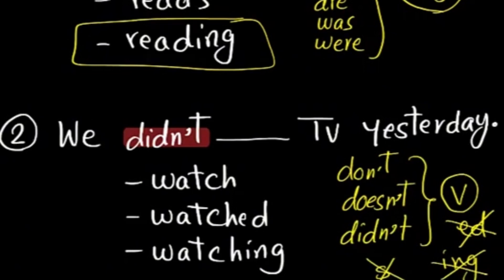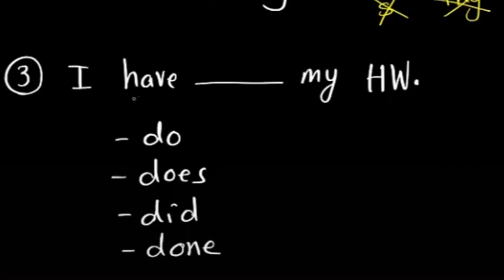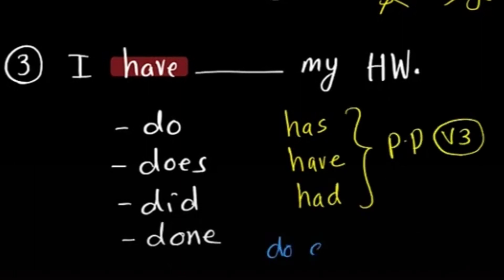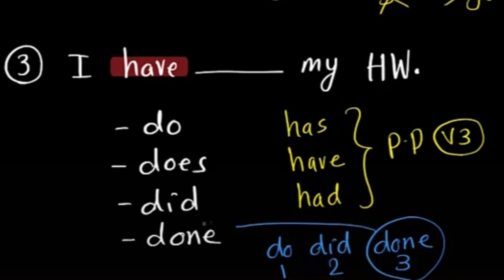Three, I have blank my homework: do, does, did, done. The key is 'have'. And after has, have, had, we choose the past participle, verb three. Here we have do, did, done. So this is verb one, this is verb two, this is verb three. So this is the correct answer: done.